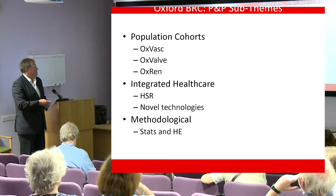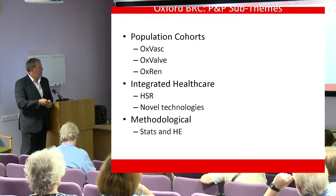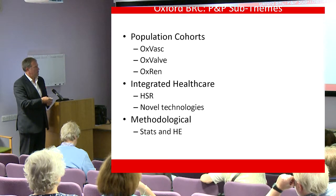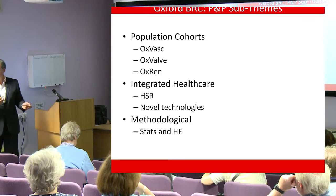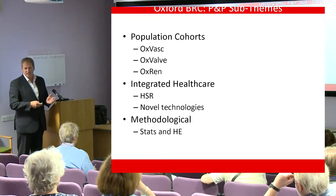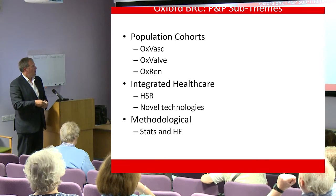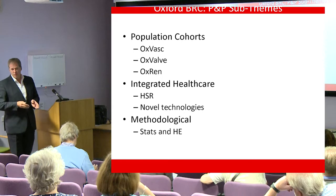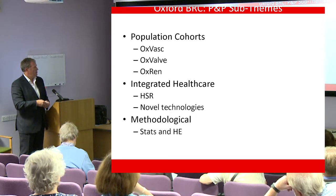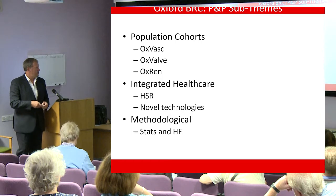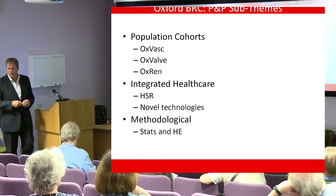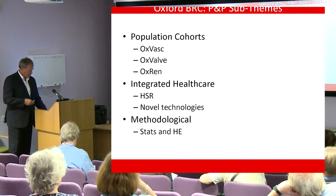We've got five themes and three population cohorts. OxVASC is the longest running — established before the BRC and continued in BRC 1 and 2. OxValve was established by the BRC, and OxREN, the renal cohort, was established within BRC 2 so it's only been running a couple of years. We've got an integrated healthcare theme run via the George Institute, interested in health service research and technologies. The methodological theme comprises non-clinical scientists — mainly statisticians and health economists — and you'll understand why when I come to that.